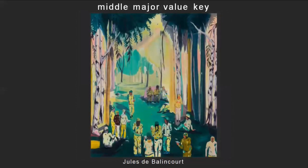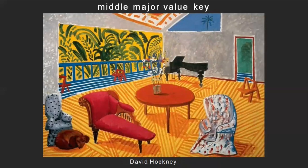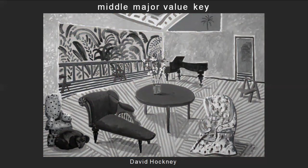Let's move on to middle. Here's a middle major value key painting by Jules de Balancourt — a contemporary painter. We'll desaturate it and see that it is made up mostly of middle value range tones, although it does have some light lights and some dark darks as well. Another example of a middle major value key is this painting by David Hockney. When we desaturate it, yes, there are some dark darks — perhaps that piano in the back or the dog in the bottom left corner — and some very light lights along the ceiling, but mostly across the board the image is composed of middle values, giving this type of contrast-filled, lively major feeling.